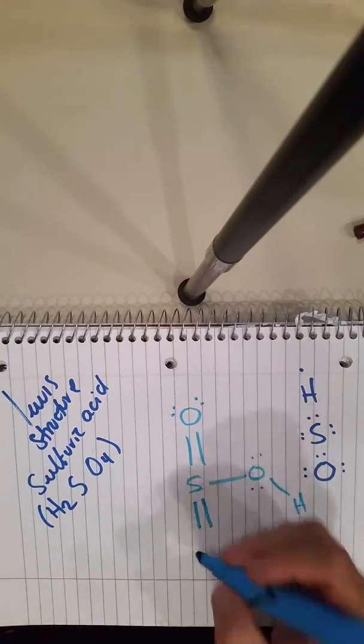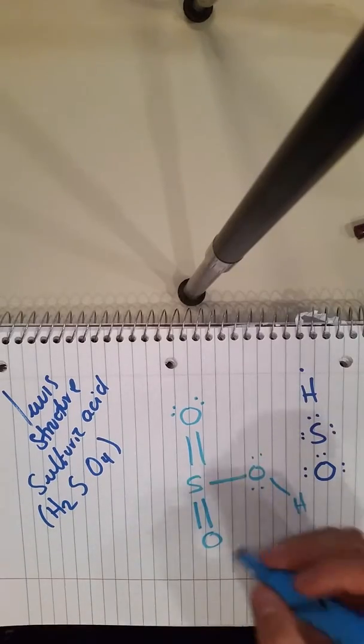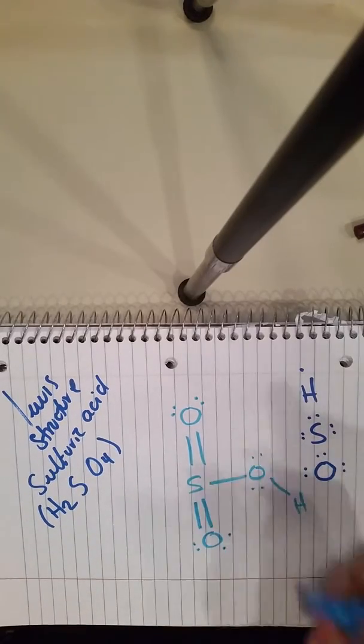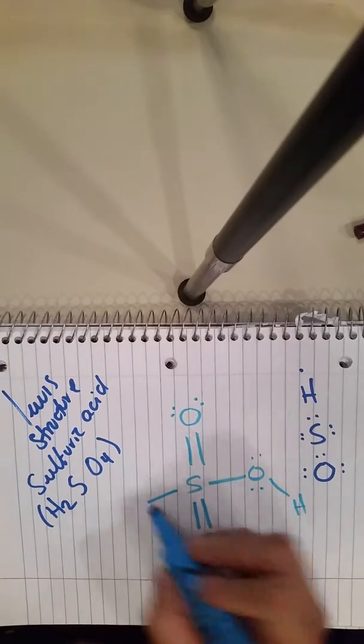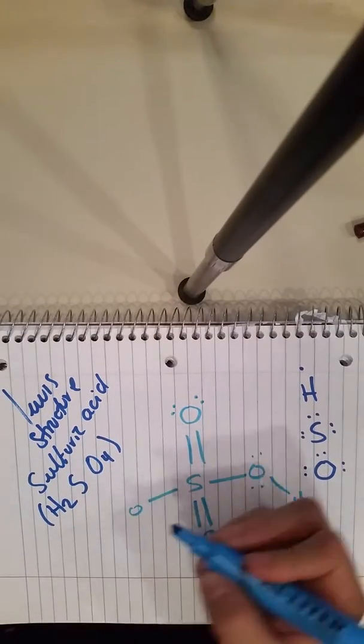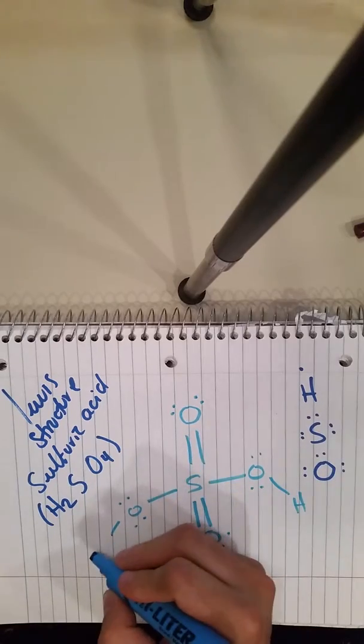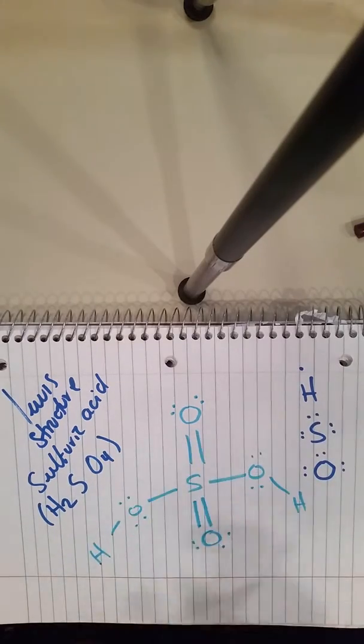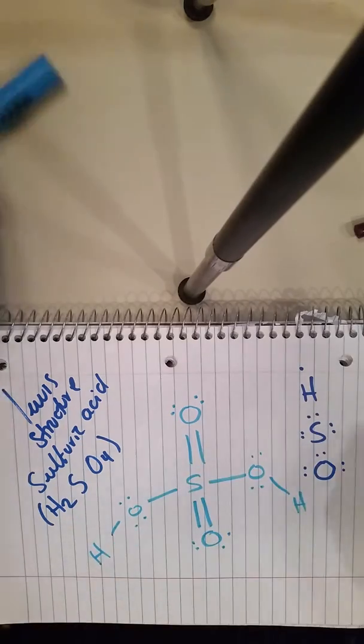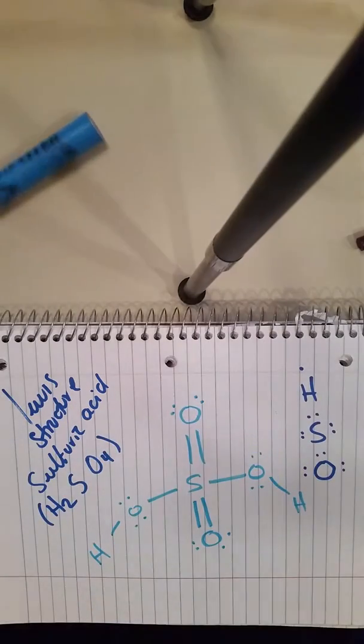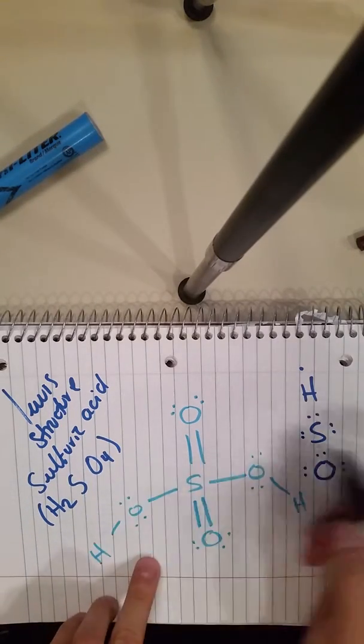Again, sulfur is linked to an oxygen for lone pairs, and again the sulfur is linked to an oxygen single bonded which this oxygen is linked to a hydrogen. So that way we complete our share of electrons.